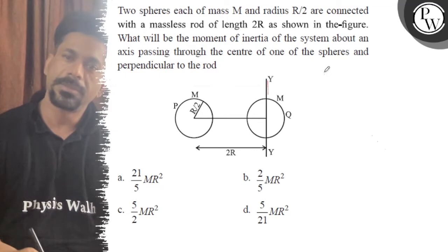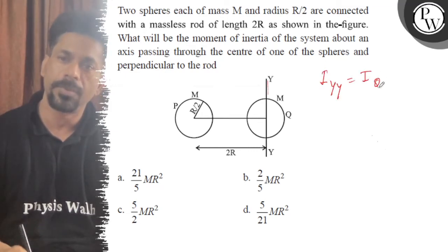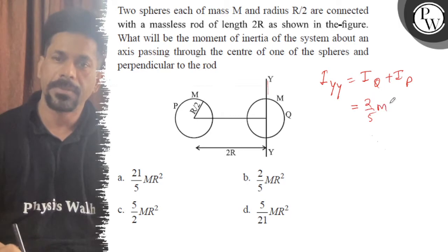So the moment of inertia about the y-y axis is equal to moment of inertia of Q plus moment of inertia of P. The moment of inertia of Q is 2/5 MR² or for R/2, that's MR²/4.